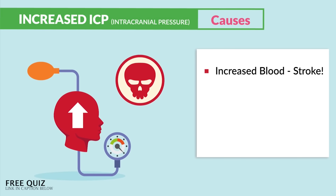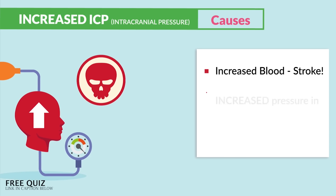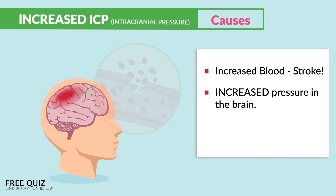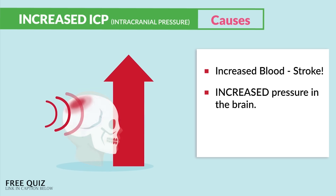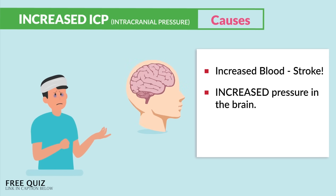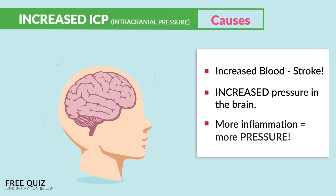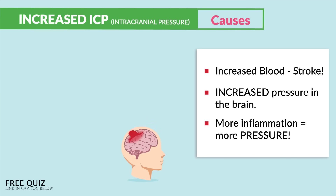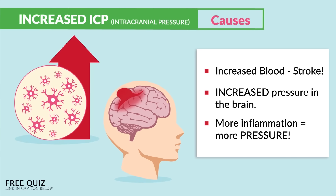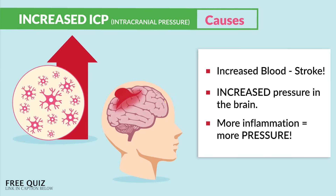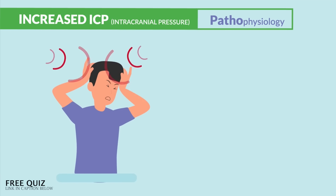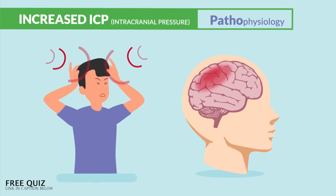As far as the causes, just think of anything that can increase pressure inside the head. From increased bleeding in the head from an aneurysm or stroke, we get a bursted blood vessel that now fills up the brain causing increased pressure. Or increased swelling and inflammation from a head trauma or even meningitis — more inflammation means more pressure. Or even increased brain tissue, like from a tumor.